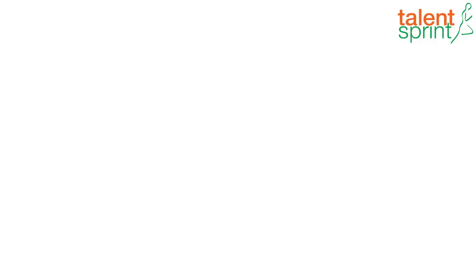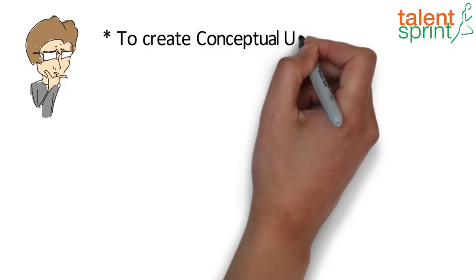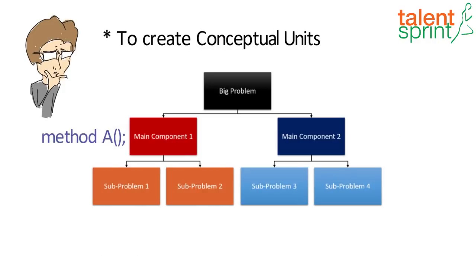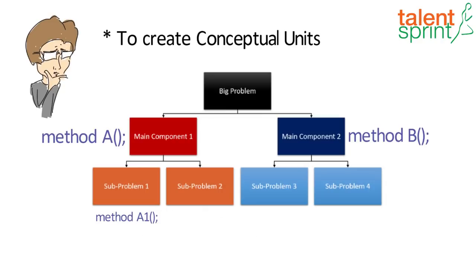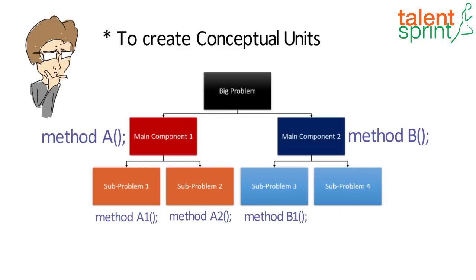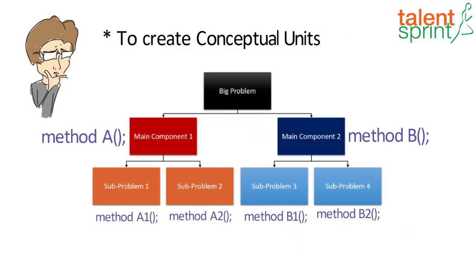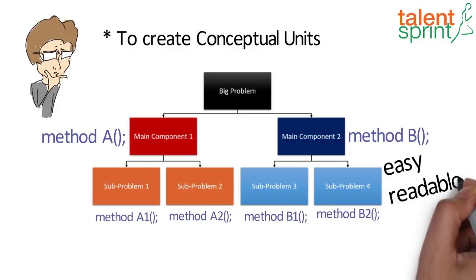The fourth reason is to create conceptual units. Create methods to do something that is one action or part of the problem. This makes programming easier and also makes your program more readable.